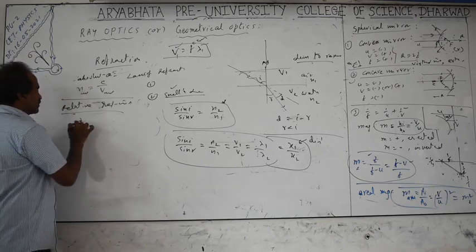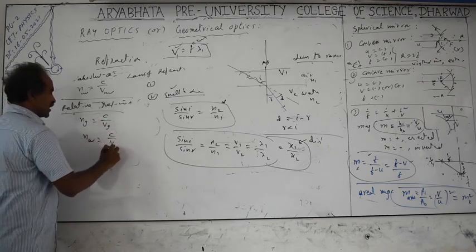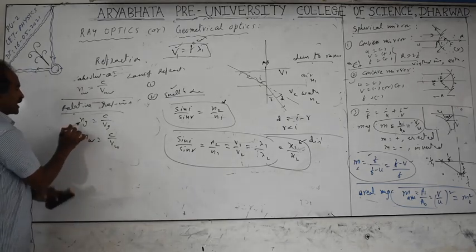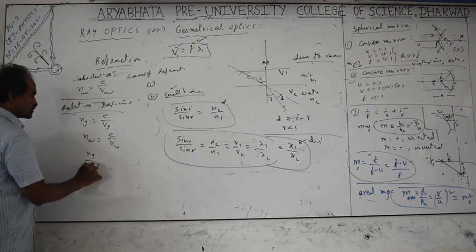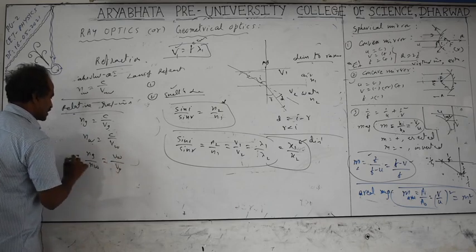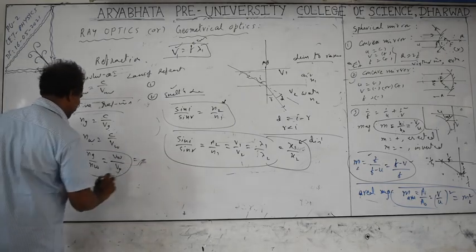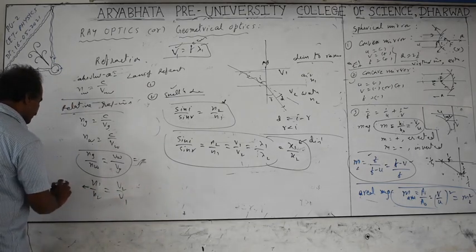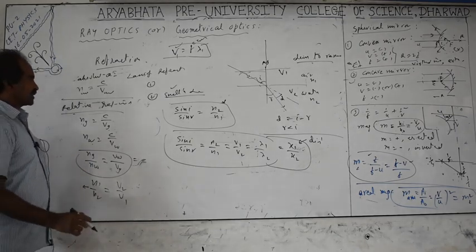The relative refractive index of glass with respect to water is n_glass/n_water = v_water/v_glass. This is also written as n₂₁ = n2/n1 = v1/v2. This is called the relative refractive index. We will discuss this term further later. That is where we stop for now.